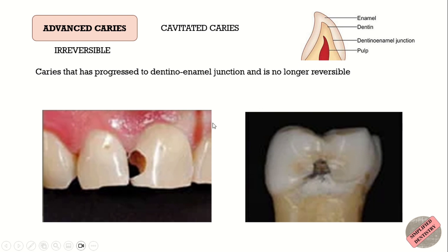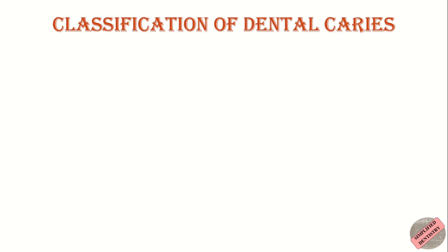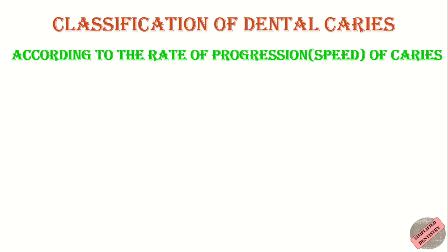When the overlying enamel breaks down, the lesion is known as cavitated caries. At this stage, the lesion cannot be remineralized and requires cavity preparation and restoration for treatment.